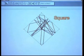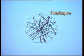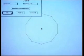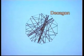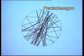Squares are relatively clean. A seven-sided heptagon, a ten-sided decagon, and a fifteen-sided pentadecagon starts to get really messy.